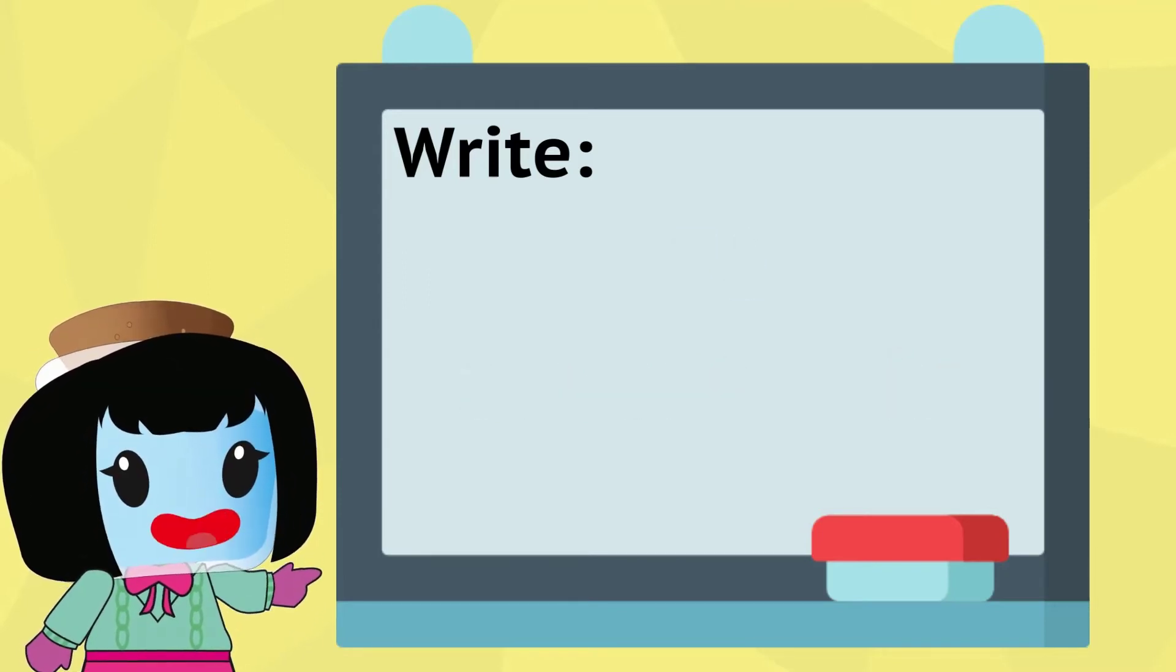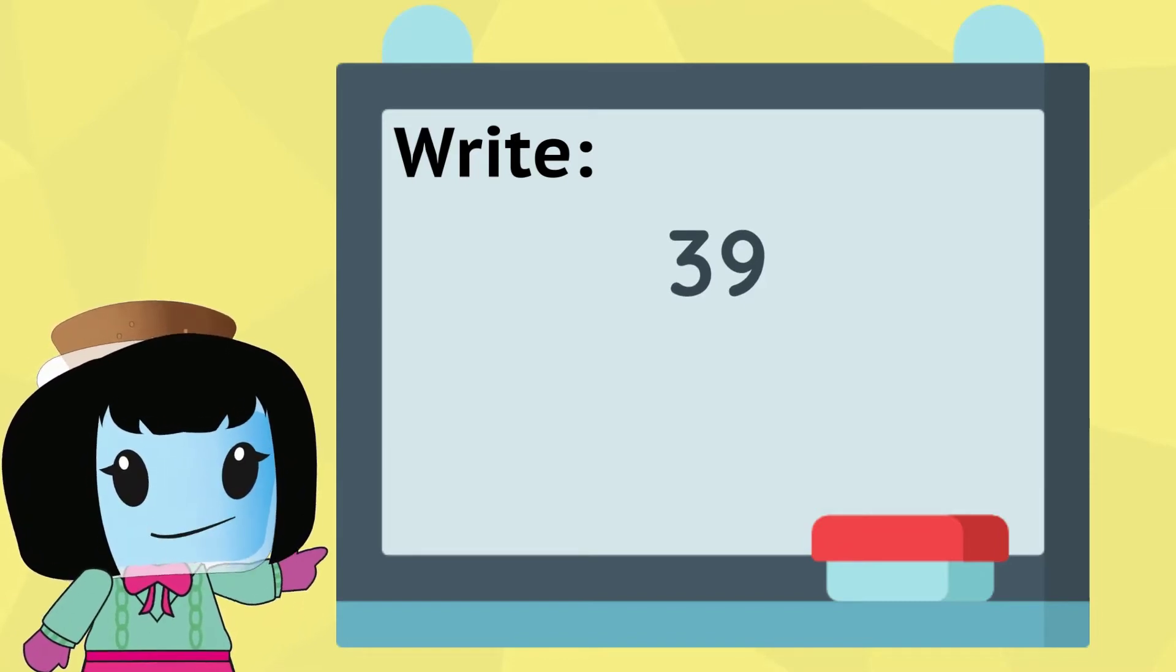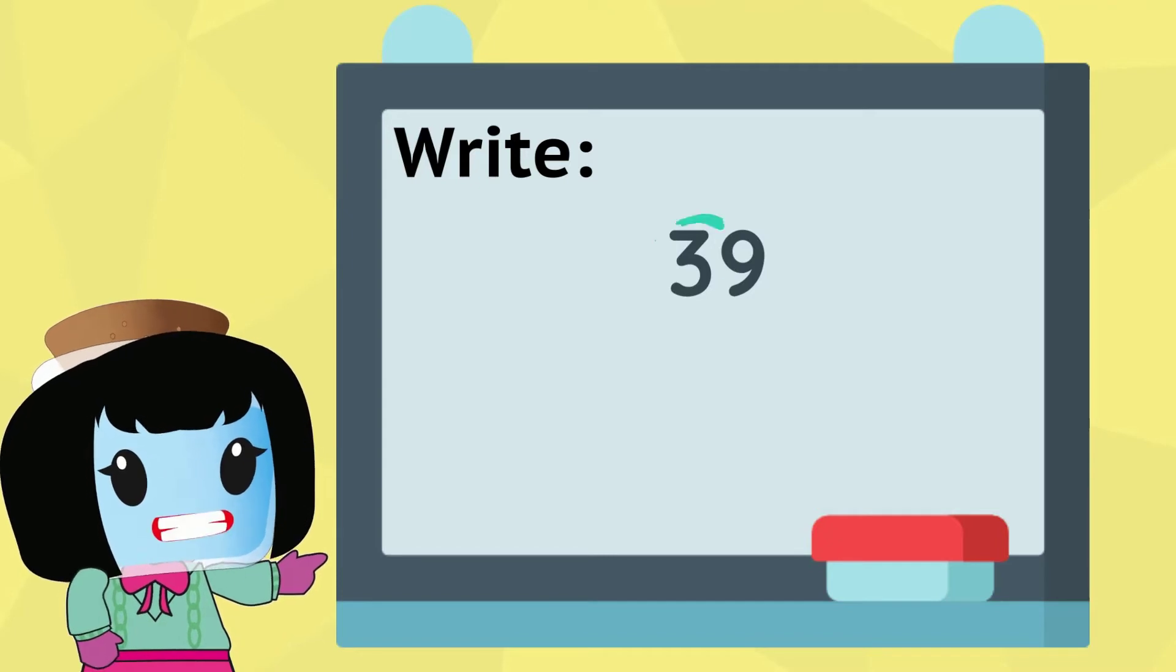Now let's try the number 39. 39 is also written with two numbers, three and nine.